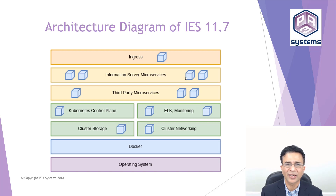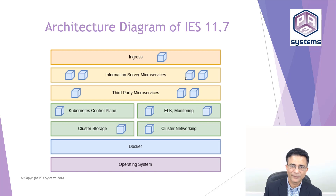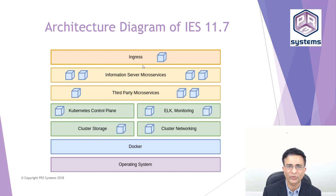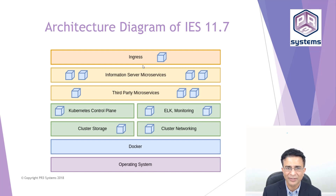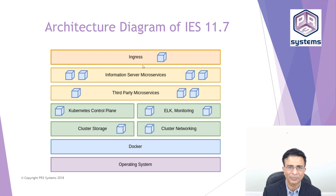This is the architecture diagram of Enterprise Search 11.7. At the top level you can see ingress. Ingress acts as a kind of reverse proxy — requests come into Enterprise Search through ingress, and based on the request, they get routed to the right pod, the right container, and the right microservice to get a response. Ingress is how communication comes in.